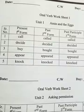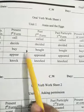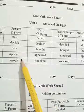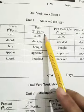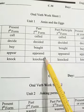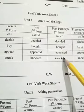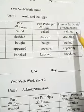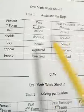Here you have been given 4 columns. This is the present form of the verb — first form. This is the second form of the verb — past tense. This is the third form of the verb — past participle. And this is the present participle or continuous form.